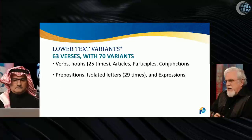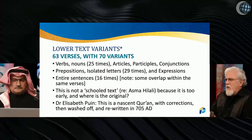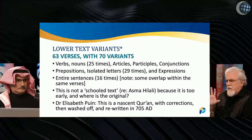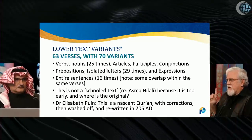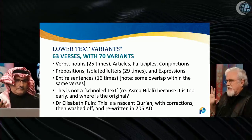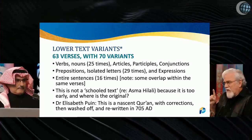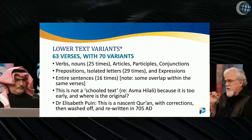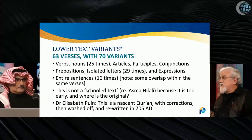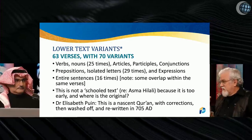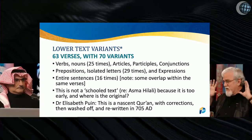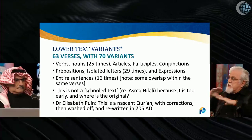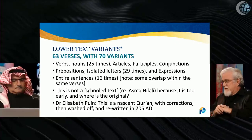Here's what she found. In the lower text, we're not talking about a full Quran — we're only talking about 63 verses. That's all that there is. However, amongst those 63 verses there are 70 variants. That means variants with the upper text — not necessarily with the Quran we have today, because even the upper text doesn't necessarily agree with the Quran we have today. Just between the two layers, we have 70 variants.